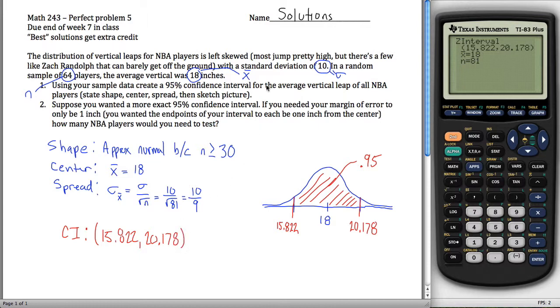In other words, we don't know the average vertical for all NBA players. We don't know it, but what we do know is that in our sample the average was 18 inches, and based on that information, and what we know about the standard deviation, we can conclude that we're 95% sure that the true value for the population mean is somewhere between 15.8 and 20.178.